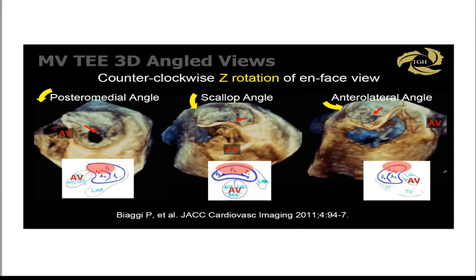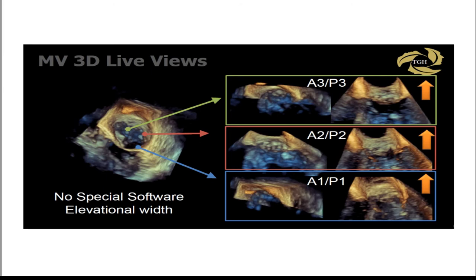You can also look at 3D live views without specialized software. Using the elevational width control on the Epic machine — and GE has a similar product — you can scroll back and forward. Scrolling back you're at A3/P3, then A2/P2, then forward to A1/P1. You've simply sliced through the mitral valve using 3D live. If looking for prolapse, you can tilt to view a true sagittal section rather than the left atrial viewpoint.